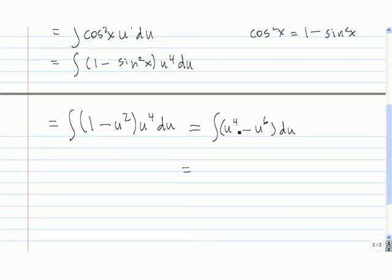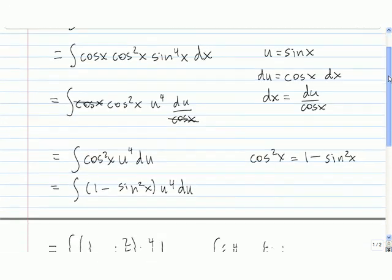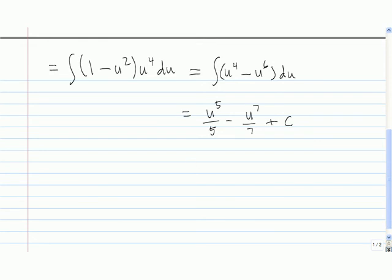And that is equal to, from the fourth portion, u to the fifth over five, minus from the u to the sixth, we get u to the seventh over seven, plus c. And now we just sub back in our u, which is sine of x. So we get sine to the fifth of x over five minus sine to the seventh of x over seven plus c.